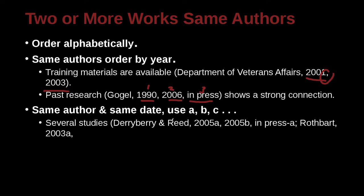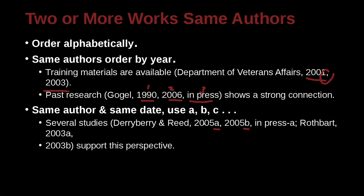Same author, same date — what are we going to do? This actually happens sometimes. Here we have an author, DeriBerry and Reed. Remember we use the ampersand here because it's inside the parentheses. DeriBerry and Reed, 2005, 2005 — that is the same year and the same authors. How can we put them together so the reader can actually find this? We're going to use the letters A and B. This means the first paper is the A paper, and the second paper is the B paper. In our reference list, we then need to specify A and B also, next to the date. This is just a way to clarify them here and in our references.